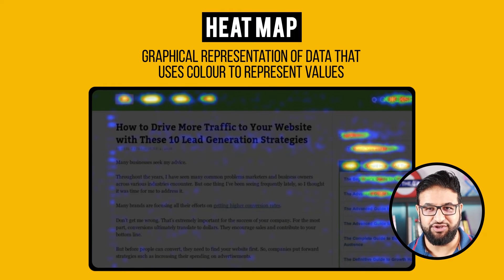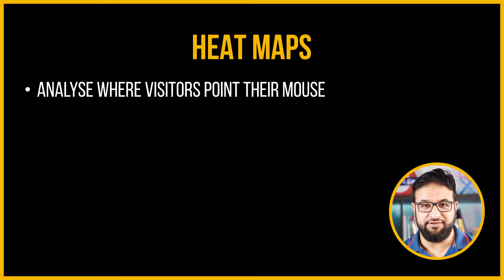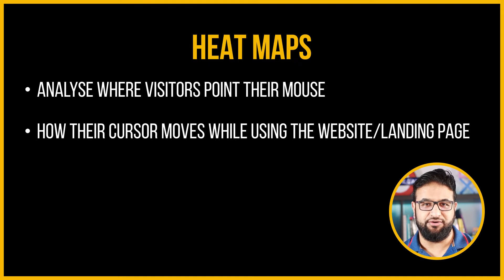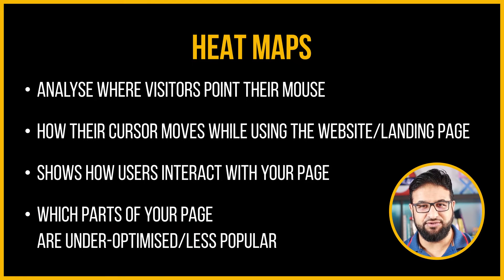A heatmap is a graphical representation of data that uses color to represent values. Depending on the type of heatmap, you will be able to analyze where visitors point their mouse the most and how their cursor moves while using the website or a landing page. Heatmaps show how users interact with your page and which parts are under-optimized and less popular. I have covered a separate video on why you should use heatmaps, how they work, their types, and how to install heatmap tools — I recommend watching that first.